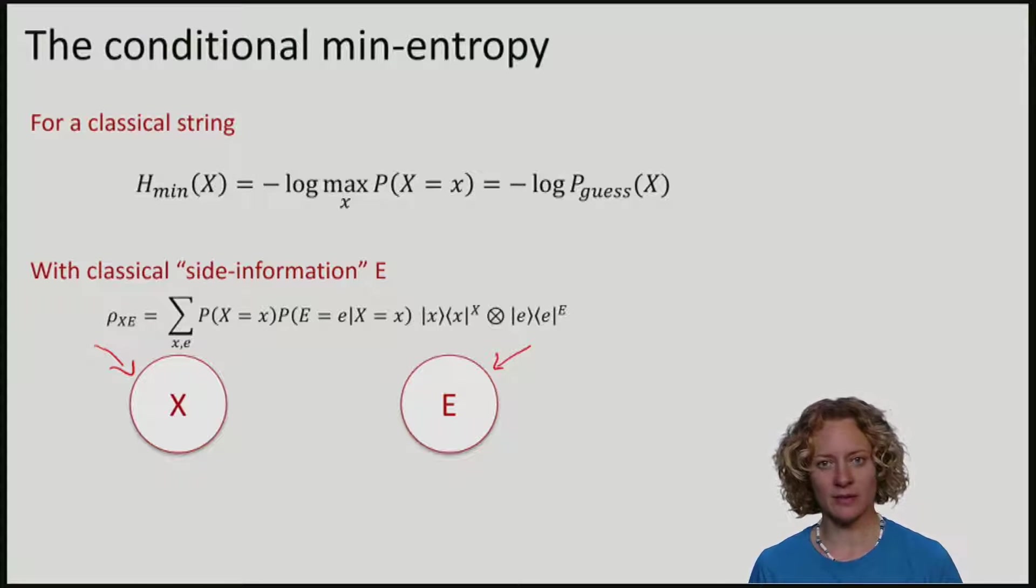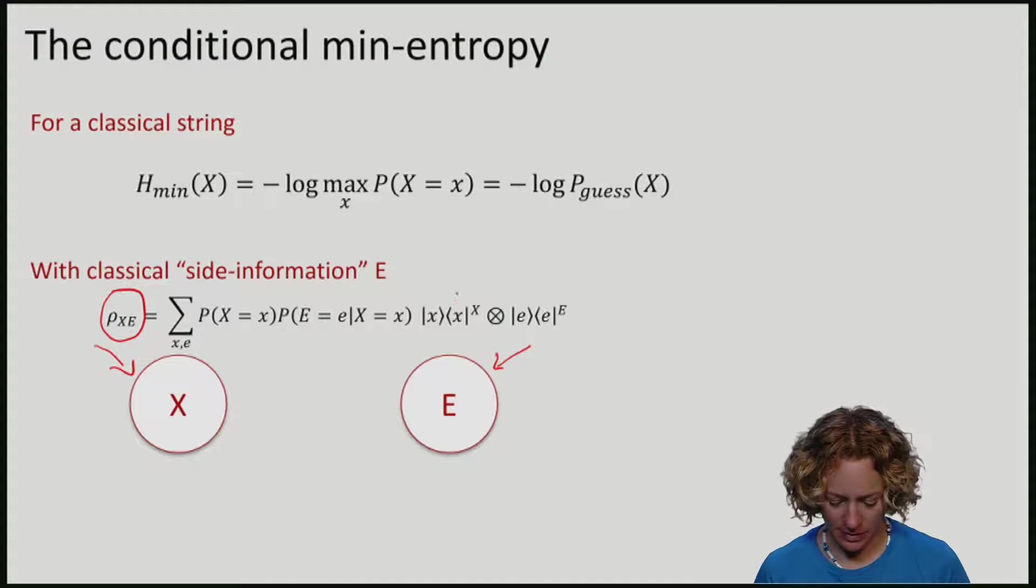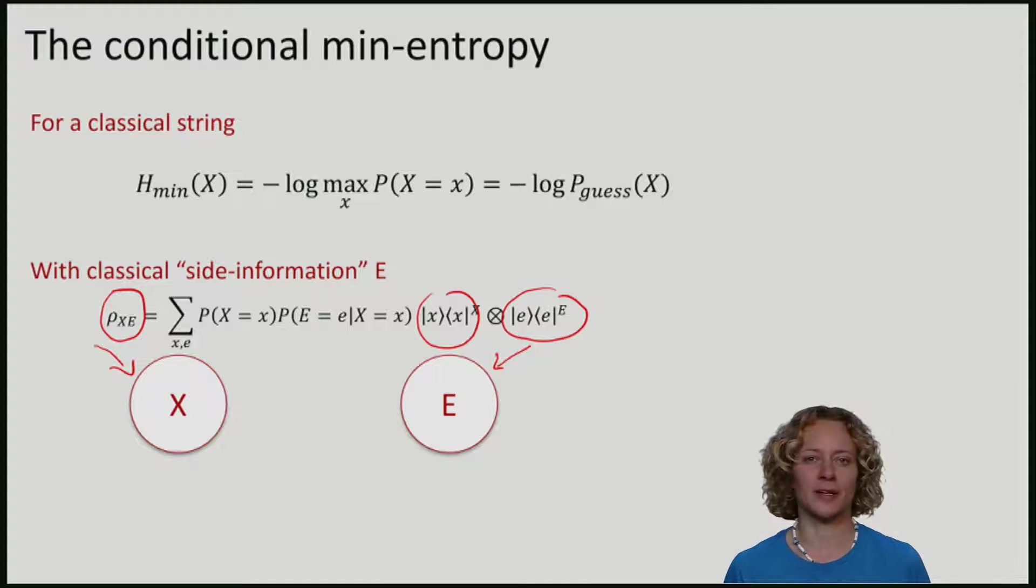Let me first start with a case where e is in fact also classical. This means that the joint state rho_XE looks like this. There's a sum over x, classical symbol x, and classical symbol e that might tell us something about x.